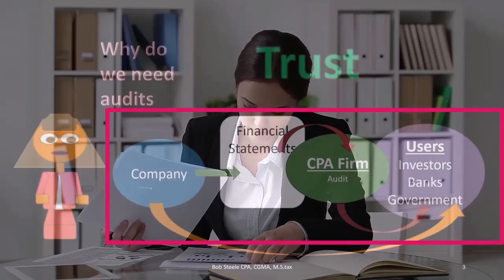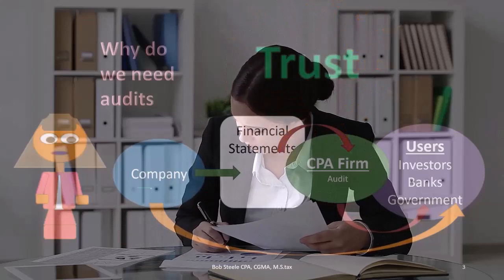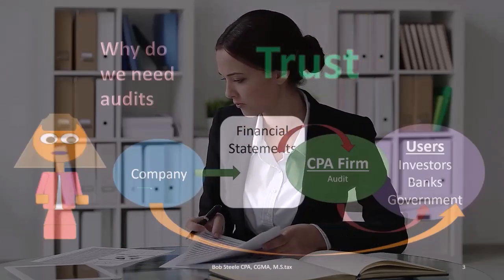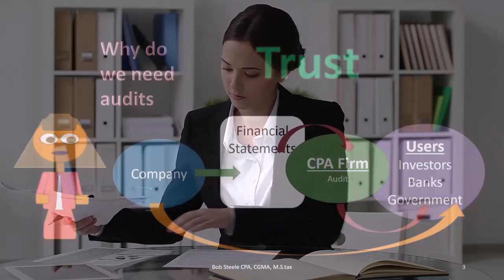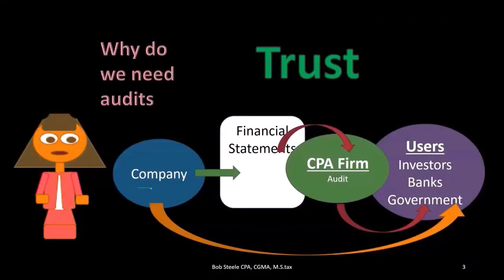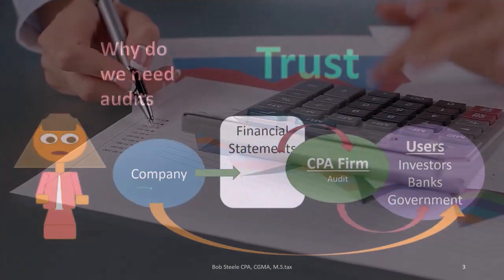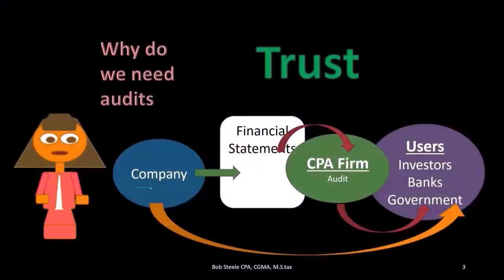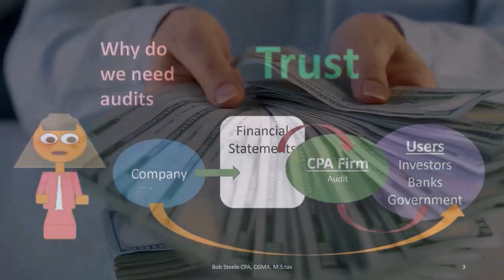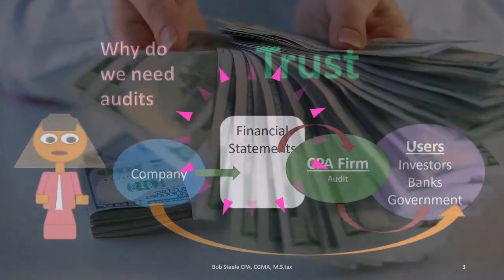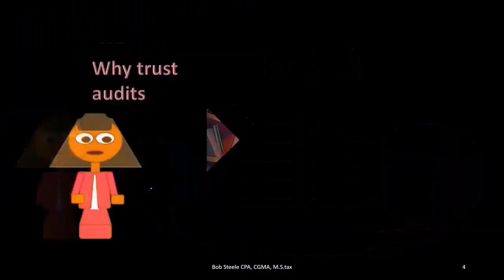There are pros and cons to this type of transaction. That added trust from the CPA firm is the benefit — that's hopefully going to say, okay, now we can have more transactions happening because there's more transparency. The end users are more confident in what the company is providing, and therefore that's going to facilitate more transactions. Of course, the downside is that it's going to cost more money to have the CPA firm go in. Audits of publicly traded companies cost a lot of money. But the idea is to facilitate transactions and provide the trust needed for people to do business.